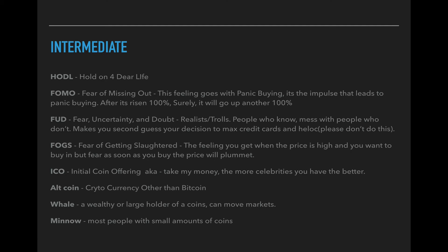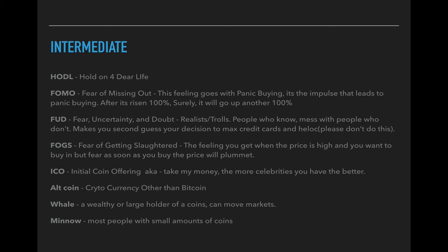FOGS — this one I came up with on my own. It stands for fear of getting slaughtered. When Bitcoin was at a high of $3,000, I didn't want to buy because it had already gone from $1,800 to $3,000 and I thought there was no way it would keep going. Next thing you know, it goes to $4,000. FOGS is really for those who think they're going to buy in too high, and then right when they buy, the carpet gets pulled out from under you — a fear of buying high and then the price cratering.